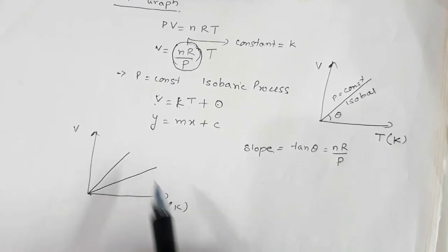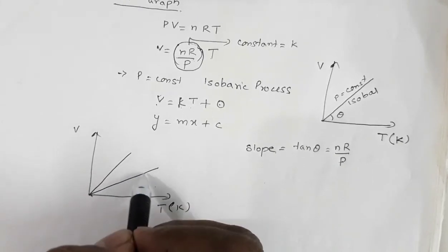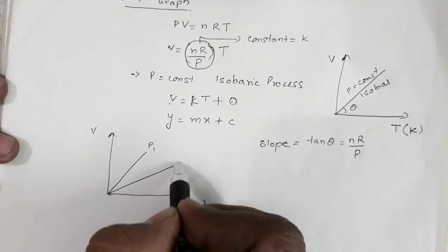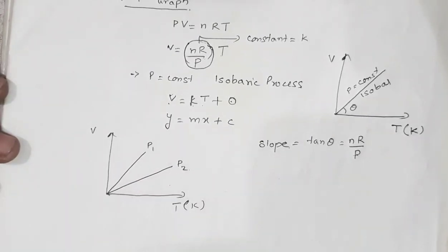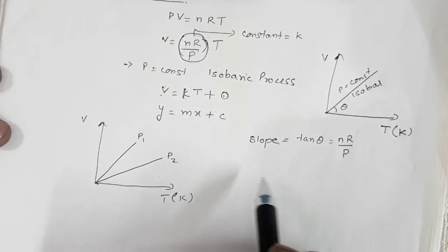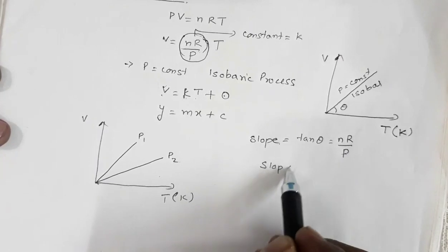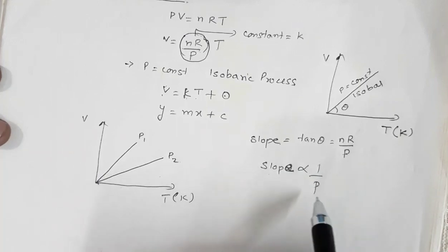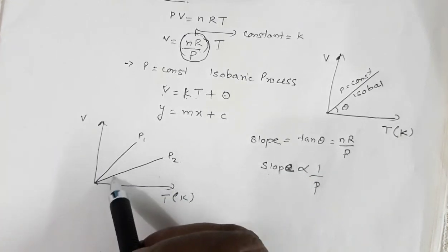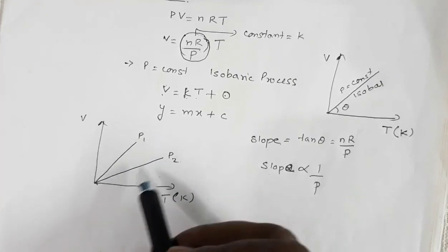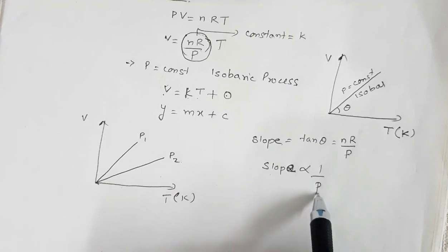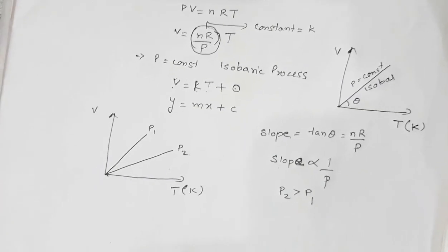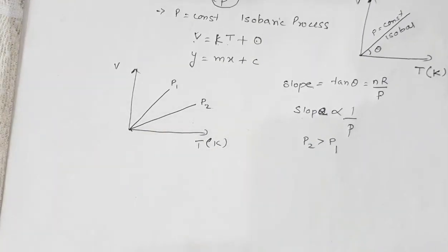For the two lines, the pressures are different — say pressure P1 for one line and P2 for the other. The slope is inversely proportional to P. As you can see, the slope of one line is less than the slope of the other. So the smaller the slope, the greater the pressure. That means P2 is greater than P1. This is how you can compare pressures from a VT graph.